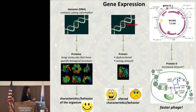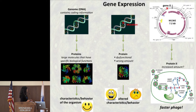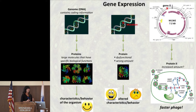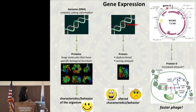Something else you might know is that DNA encodes all the genetic information for an organism — whether it's a bacterium or a human being, it's the same idea. That information encodes proteins, which are the workhorses in the organism. They give you the characteristics and behaviors you have. If you have a change in your DNA, which we call a mutation, that can affect your proteins.